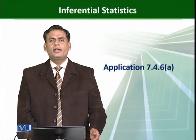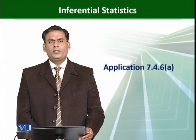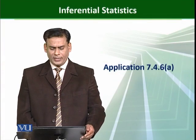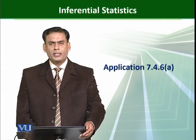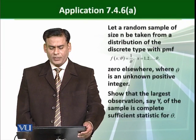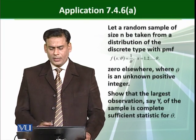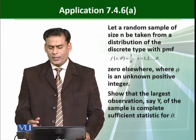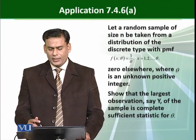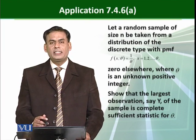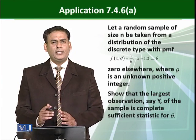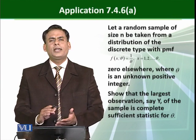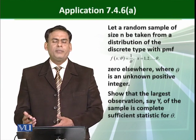We take another example from the Hogg, McKean, and Craig's book — Application number 7.4.6, part a. The statement of this question: let a random sample of size n be taken from a distribution of the discrete type. We are considering a discrete distribution so that you can easily understand how we can handle the discrete type of random variables for completeness.